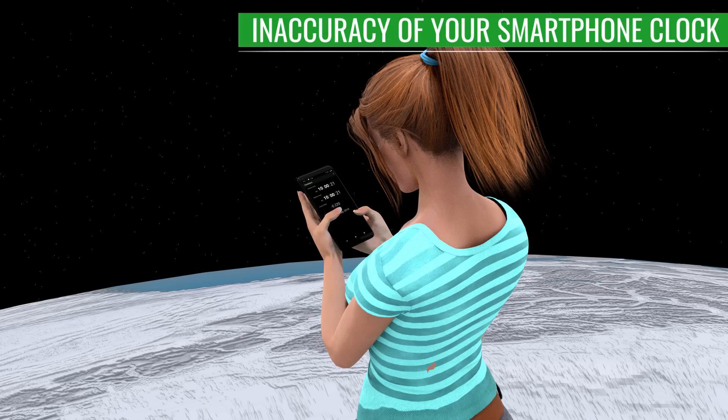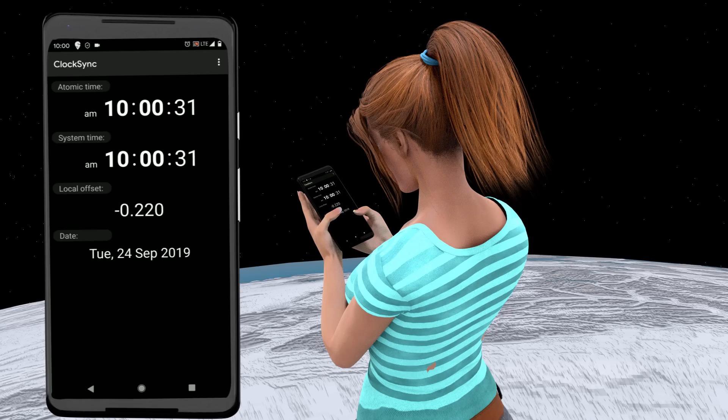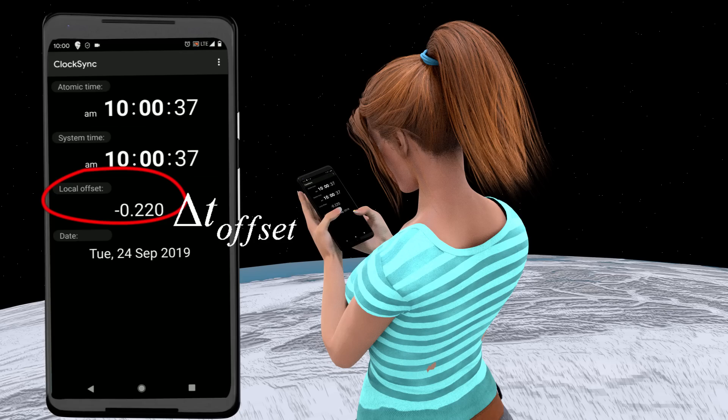You can easily see how inaccurate your smartphone clock is compared to an atomic clock by checking the time settings. We call the difference between the actual time and the time measured by your mobile phone as time offset. This time offset will cause a huge error in GPS calculations. How do we overcome this issue?